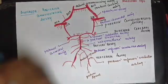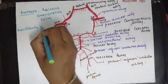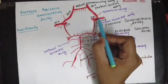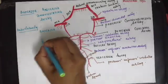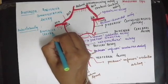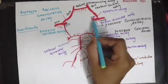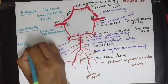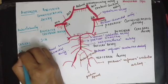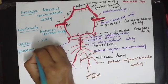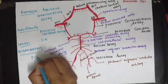Now we are going to mention the boundaries of the Circle of Willis — the arteries forming the circle. Anteriorly the circle is bounded by the anterior communicating artery. Anterolaterally it is bound by the anterior cerebral artery on both sides. Laterally it is bound by the ICA, the internal carotid artery. Posterolaterally it is bounded by the posterior communicating artery.